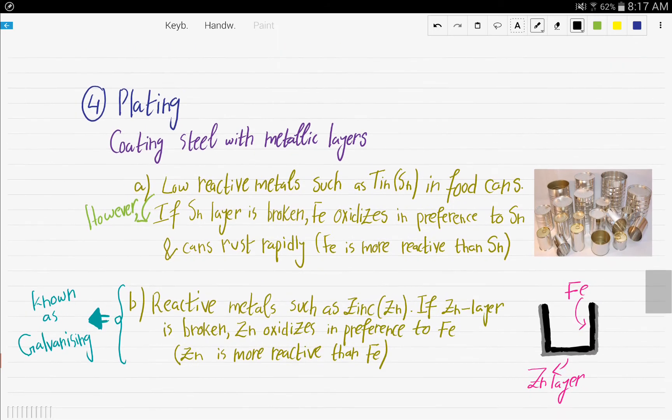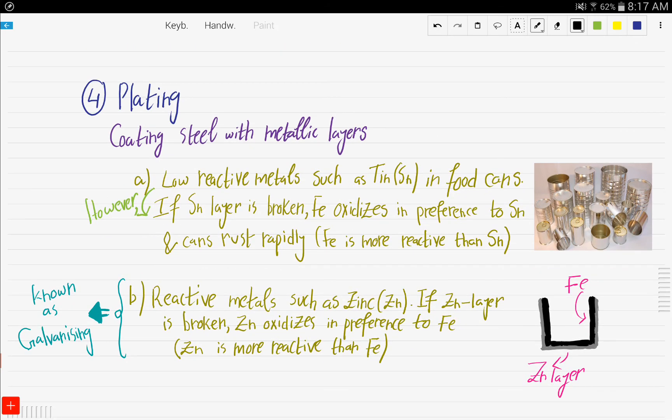The fourth rust prevention technique is plating. Plating is coating steel with metallic layers. Now, the difference between plating and alloying is that in alloying, you mix the iron with other metals. Here, you're just coating iron with metallic layers—coating versus mixing.